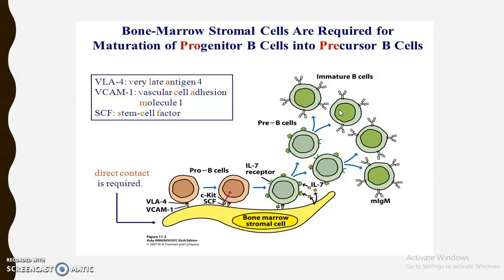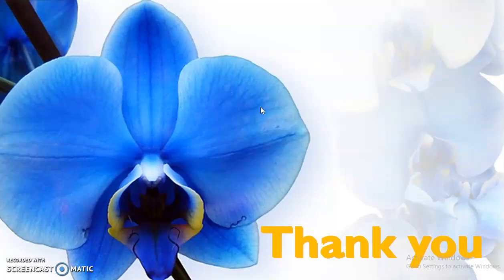This is followed by the formation of mature B cells. Mature B cells express membrane-bound immunoglobulin M and immunoglobulin D on their surface. That's all about B cell maturation, which occurs in the stromal cells of bone marrow. Thank you.